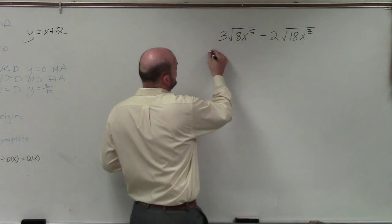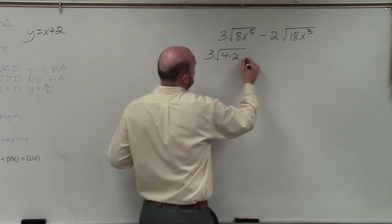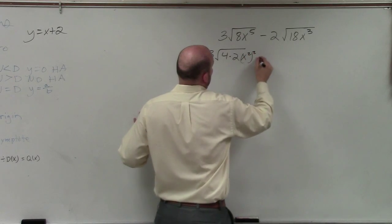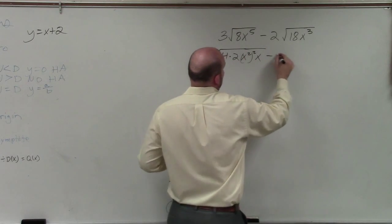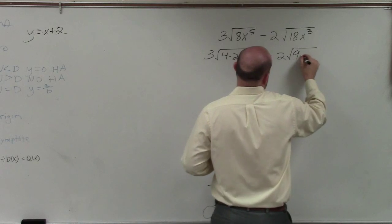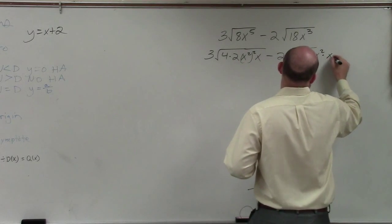So I'm going to rewrite this as 3 square root of 4 times 2 x squared squared times x minus 2 square root of 9 times 2 x squared times x.